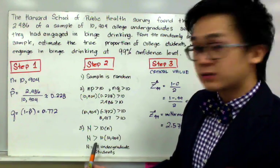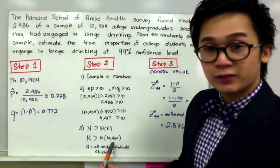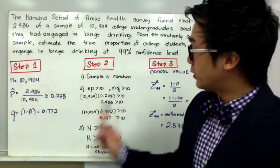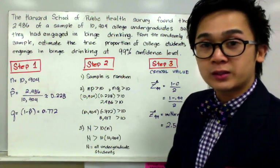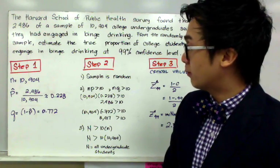which is most likely greater than 10 times 10,904, therefore step number two is finished. We satisfied all three conditions for this particular confidence interval problem.